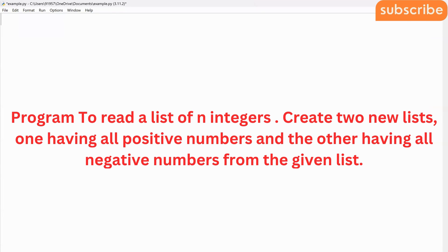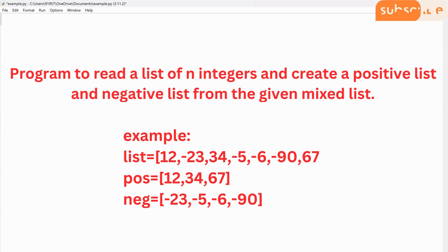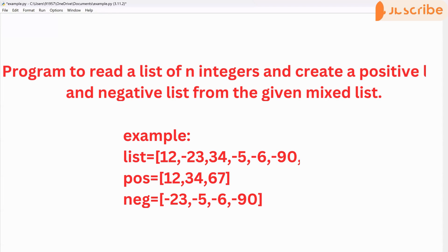Hey everyone, in today's class we'll see how we can create a list of n integers and then how we can separate the positive numbers and negative numbers into two different lists. I will create a list of n integers having both positive and negative numbers, and then create two different lists — one for positive numbers and one for negative numbers.